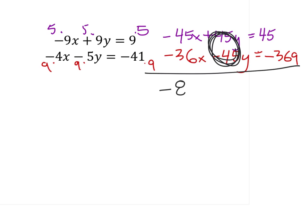And 45 minus 369 is -324. If I need to solve for x, we'll just divide both sides by -81, and that would tell us then that x is 4 because we have two negatives right here, which would give us a positive there.